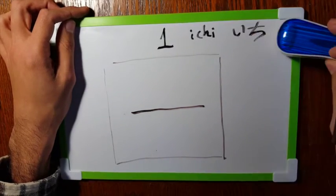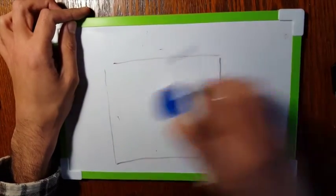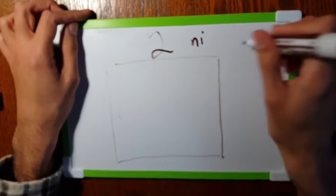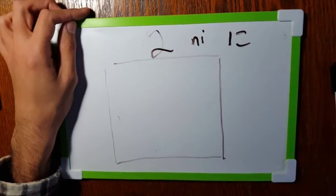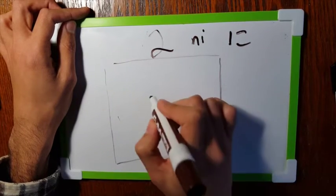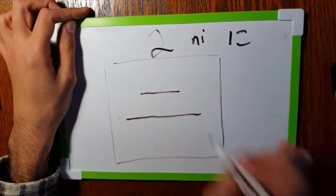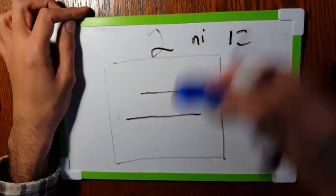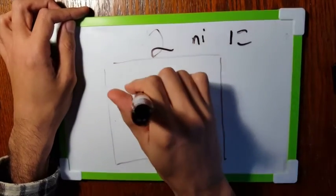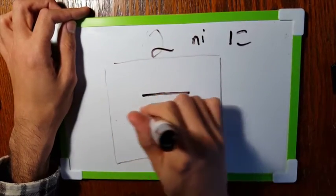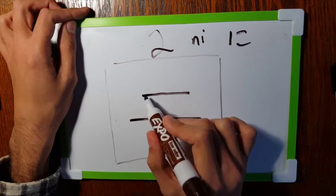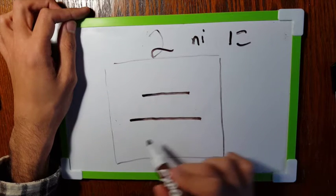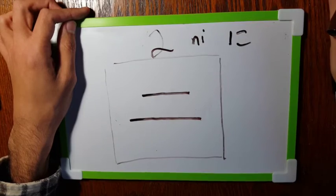Now let's go to two. That's nii in hiragana. That's two strokes. One, two. Again. Usually make sure the first one is a little bit shorter than the second one. That's nii.